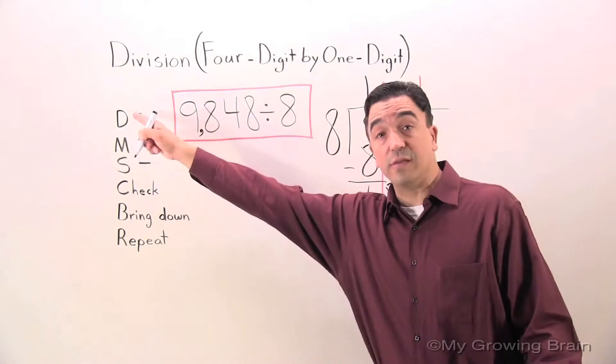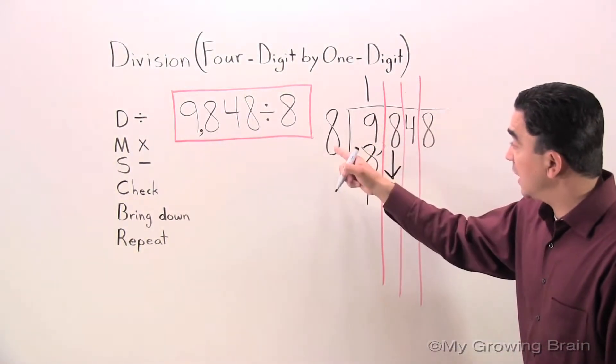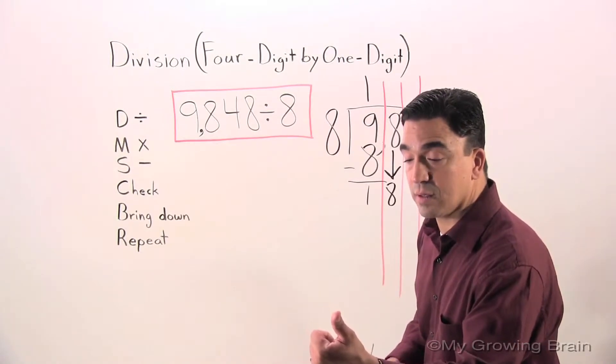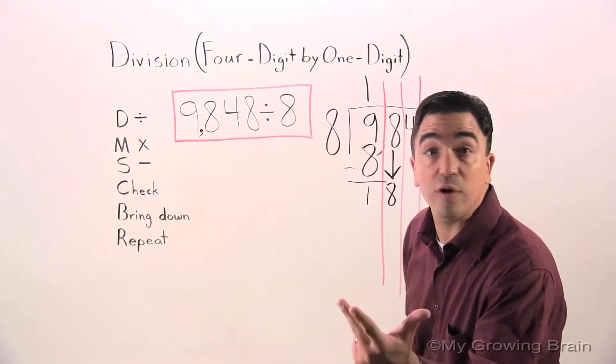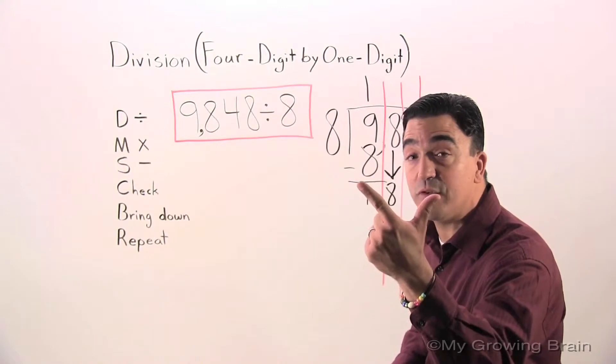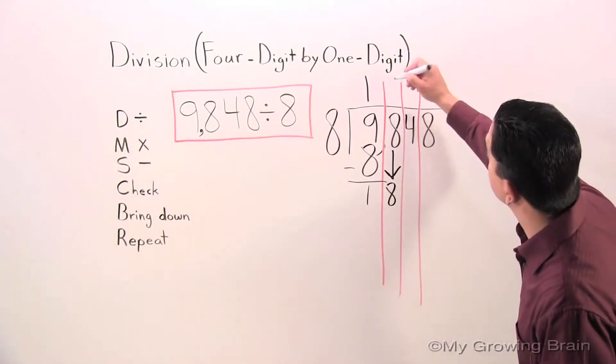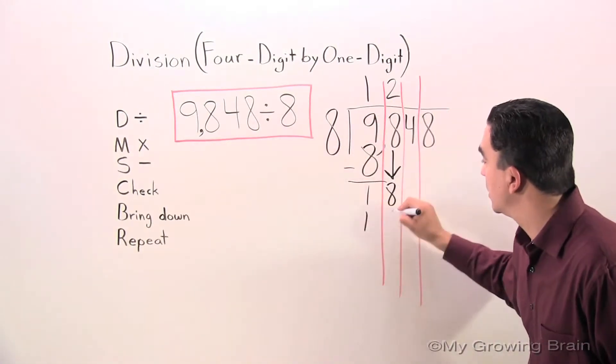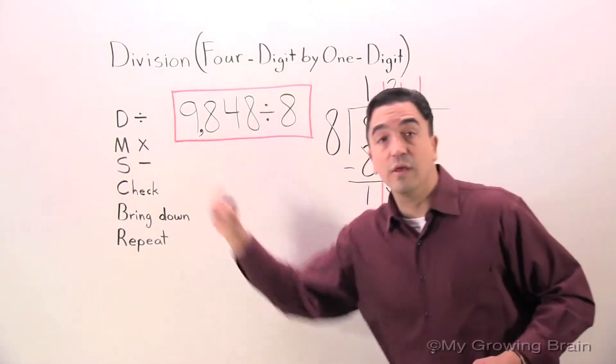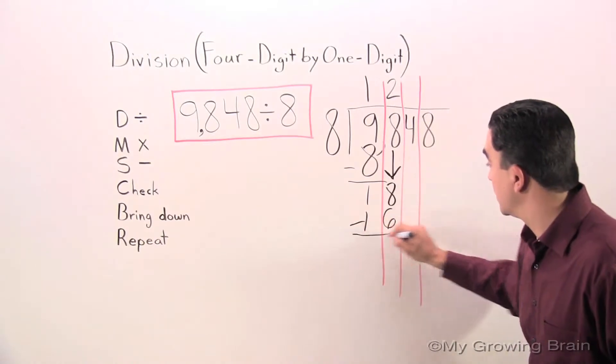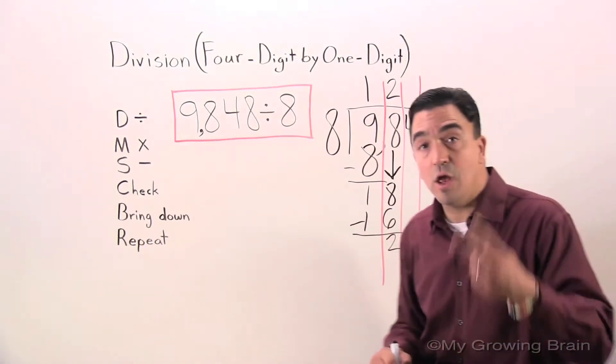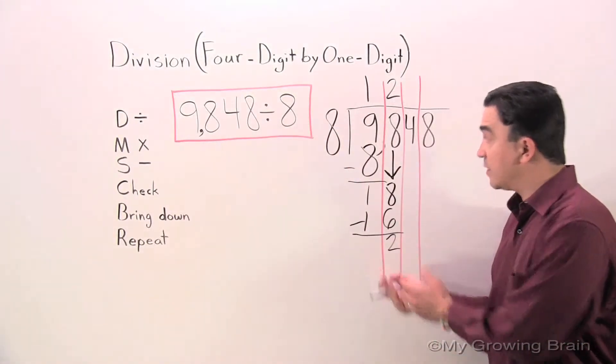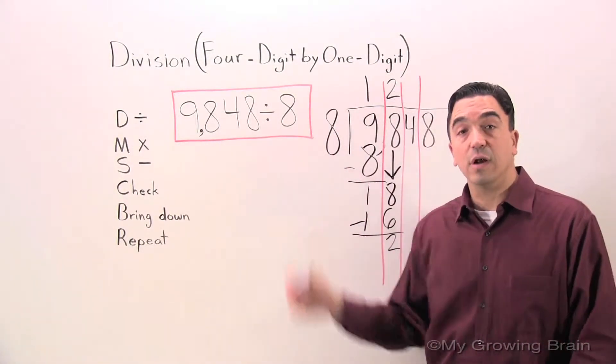Repeat the process. Back to the top. 8 into 18. 8, 16, 24. 24 is too much. 8 times 2 is 16. Multiply. 8 times 2, 16. Subtract. 18 minus 16, 2. Check. That is less than the divisor. Let's keep going.